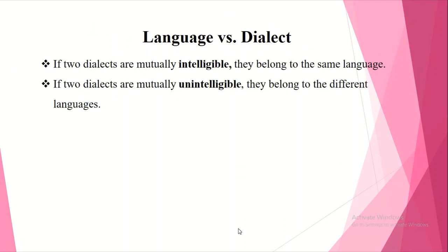After getting enough idea about language and dialect, it is important to know the distinction between them. If two dialects are mutually intelligible, they belong to the same language — they have the same origin. In contrast, if two dialects are mutually unintelligible and not easily understandable, they belong to different languages.